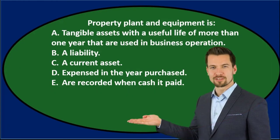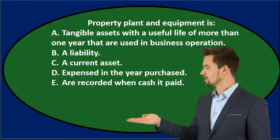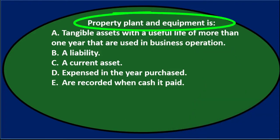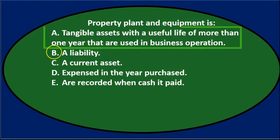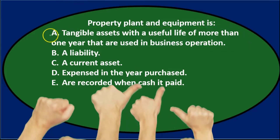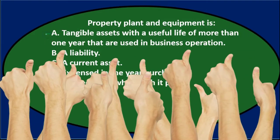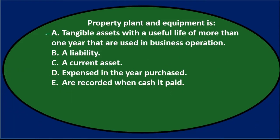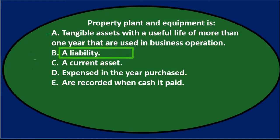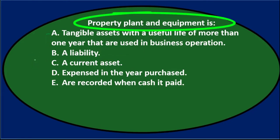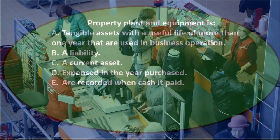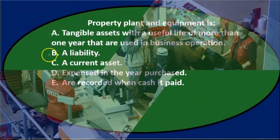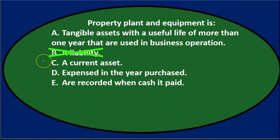We'll go through this one more time and go through the process of elimination, see if we can eliminate some of the options. Property, plant, and equipment is A. Tangible assets with a useful life of more than one year that are used in business operations. That sounds pretty good for what property, plant, and equipment is, so we'll go through the rest of them. B says a liability. Property, plant, and equipment is not a liability — it's some type of asset we purchased to use in the future, such as equipment. So we'll cross that one out.